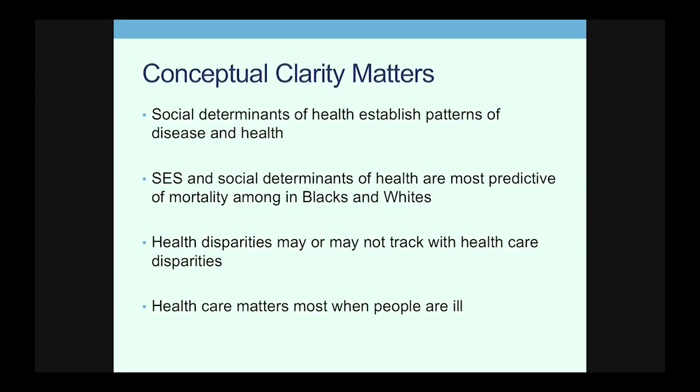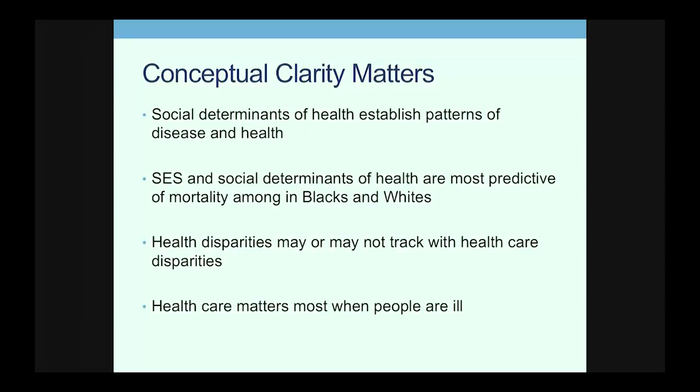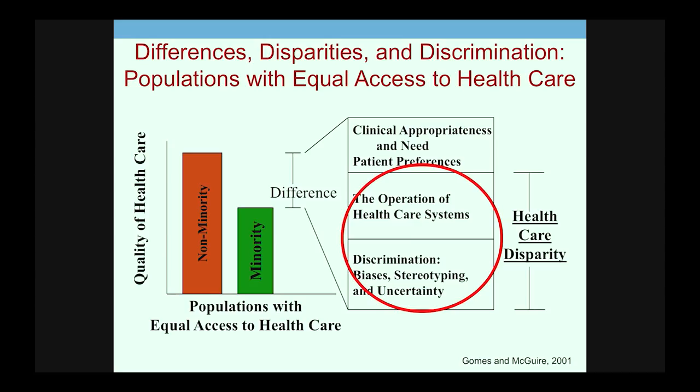To repeat: the social determinants of health are what establish patterns of disease and health. Socioeconomic status and other social determinants are by far the clearest predictors of mortality among both African Americans and whites in the United States. On the other hand, health disparities may or may not track with health care disparities — and I know this can be confusing.